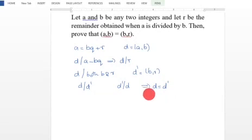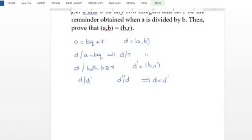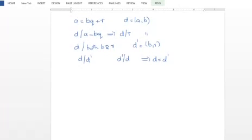That is, GCD of A, B is equal to GCD of B, R. This gives us Euclid's algorithm.